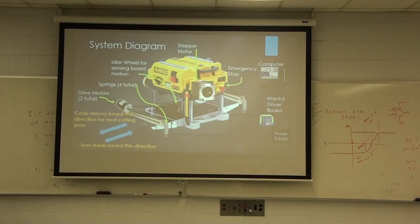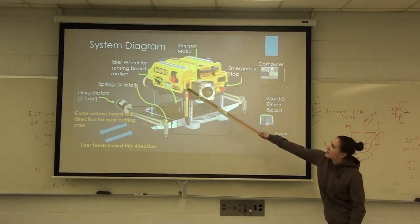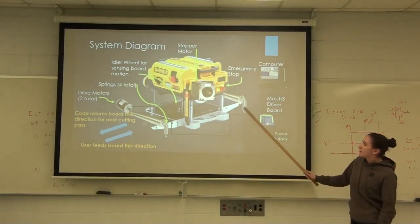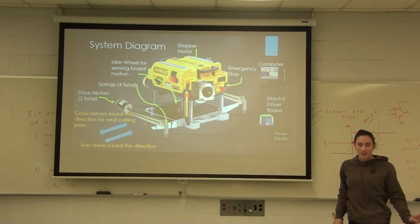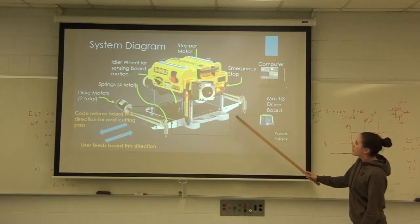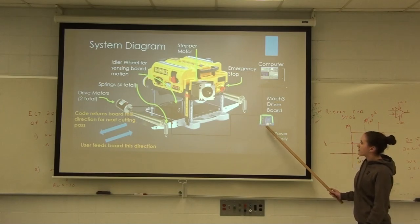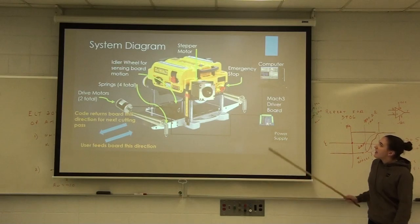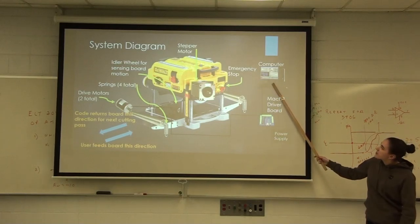And then this is our system diagram. We have since gotten a different planer, so it looks a little different, but all the same concepts are there. So we have a stepper motor that controls the up-down motion of this whole piece, which contains the cutting head. We have an emergency stop to shut it down. Then all the motors are run from this breakout board that's connected to an external power supply and then a computer. And this is the interface that a user would see.